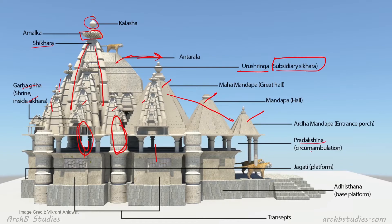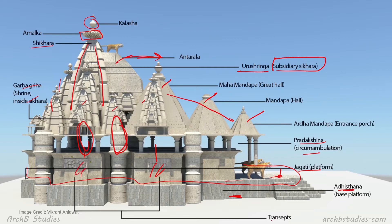You can see the Pradakshina, which is the whole boundary path around the temple where worshippers circumambulate. Then we have Jagati, which is the platform — all of this area is Jagati — and at the base is the Adhisthana. These walls are called transepts. In the plan, these walls project outward; you can see all four of them as transepts, a concept similar to what is found in churches.